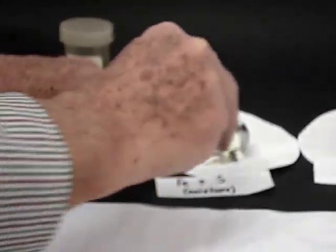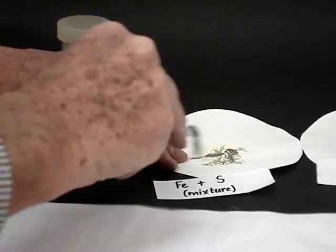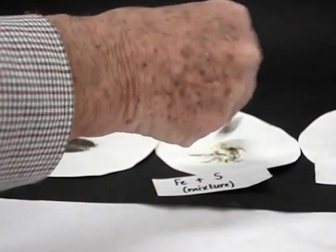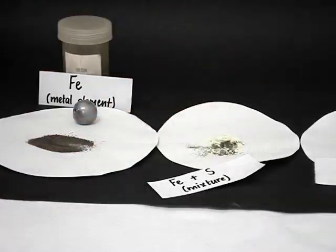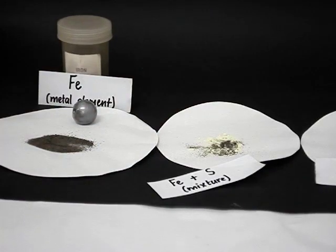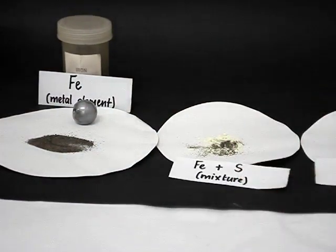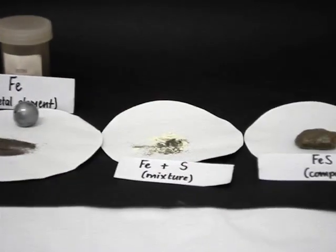When we do so, each of the components of this mixture retains its own properties. The sulfur remains yellow, the iron remains silvery. The sulfur is still non-magnetic and the iron is still magnetic.